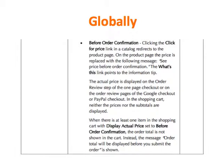The Before Order Confirmation setting: clicking the Click for Price link in a catalog redirects to the Product page, where the price is replaced with the message 'See price before order confirmation.' The What's This link points to the information tip. The actual price is displayed on the order review step of the one-page checkout, or on the order review pages of the Google checkout or PayPal checkout. In the shopping cart, neither the prices nor the subtotals are displayed. When there is at least one item in the shopping cart with Display Actual Price set to Before Order Confirmation, the order total is not shown in the cart — instead, the message 'Order total will be displayed before you submit the order' is shown.